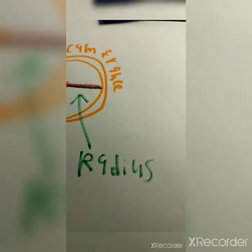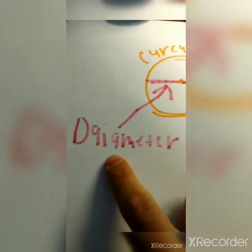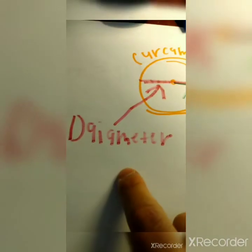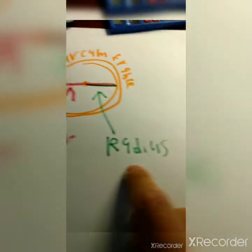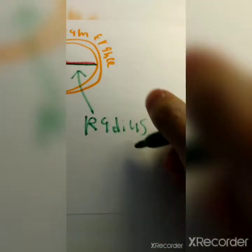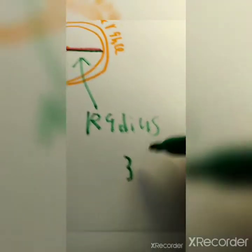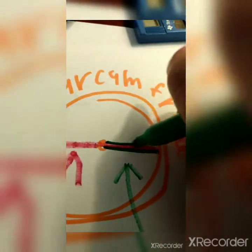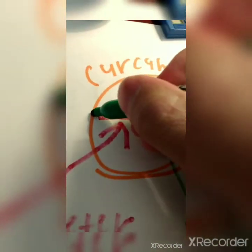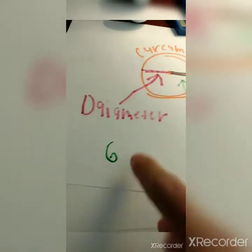The next definition we're going to take a look at is the diameter. The diameter stretches from one end of the circle to the other end. The diameter is actually double the size of the radius. If the radius was 3, for example, the diameter would be 6, because the radius only reaches from the center point to the edge, but the diameter goes from one end to the other. So the diameter is double the size of the radius.